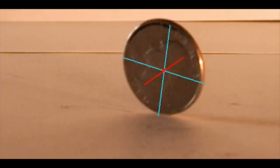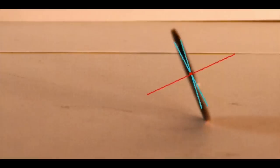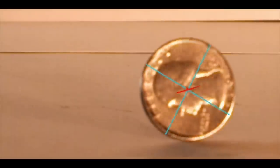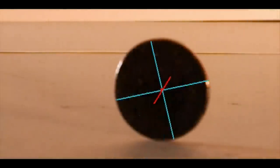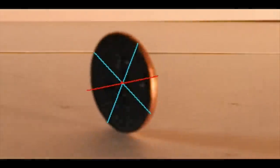Next, an ellipse detection algorithm was applied to each frame. It takes five parameters to fully describe an ellipse: the x and y coordinates of its center, the length of its major axis, the length of the minor axis, and the rotation angle, or tilt.